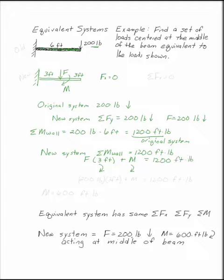By the sum of forces in the y direction, I know that F is 200. So 200 times 3 plus M equals 1,200 foot-pounds. Therefore, M equals 600 foot-pounds.